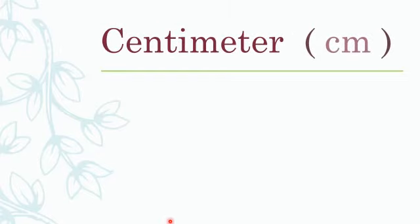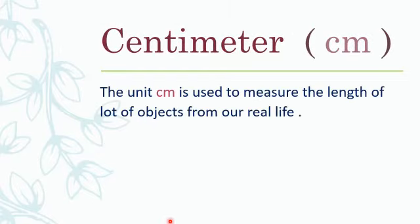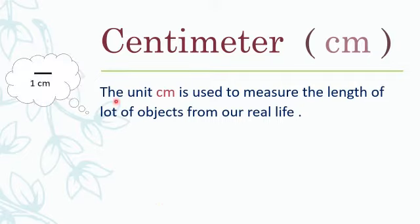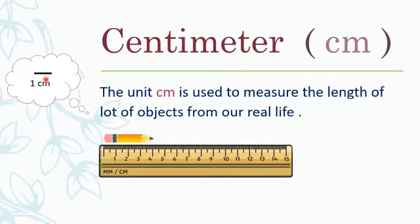The second unit of length in this lesson is centimeter. We write it cm. The unit centimeter is used to measure the length of a lot of objects from our real life. This dash measures one centimeter. If I want to measure the length of a pencil, I use a ruler, since the length of a pencil is in centimeter.